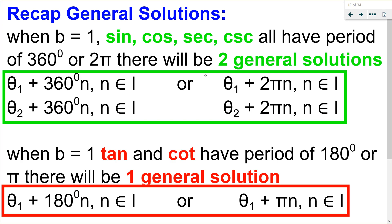Let's recap general solutions. For sine, cosine, secant, and cosecant, they all have a period of 360° (or 2π) when b = 1, so there will be two general solutions. For tangent and cotangent, the period is 180° (or π) when b = 1, so there will be just one general solution, adding on multiples of 180° or π. Find solutions from 0 to the period, then add on multiples of the period.